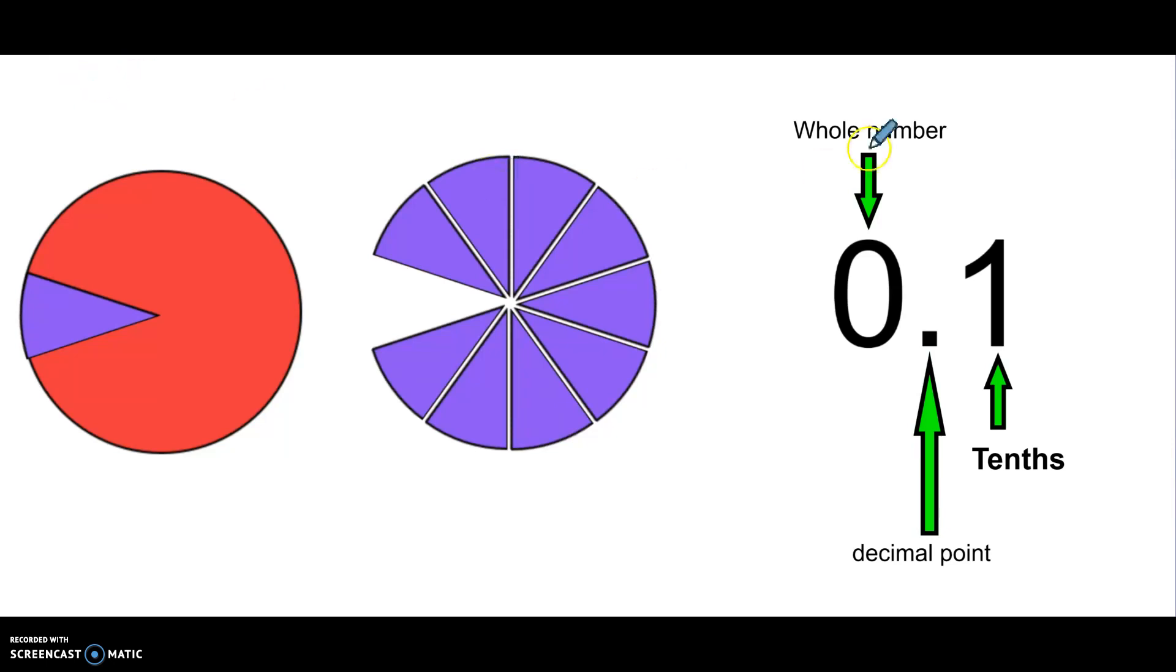So when writing numbers with a decimal point, here we have a whole number. Well, I only have one-tenth showing, so I don't have my one whole. I only have a fraction, a smaller piece of it. That comes after the decimal point. The place after the decimal point is tenths.